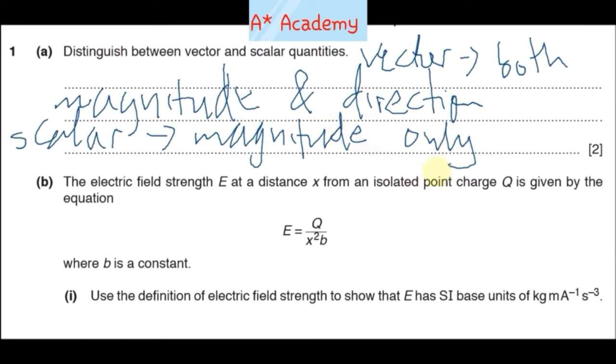The electric field strength E at a distance from an isolated object... use the definition of field strength to show that E has SI base units of that. Well, electric field strength can be defined as the force per unit charge in an electric field, the force per unit charge at that point in an electric field. Right, so since it's force per unit charge, it means that E has got units of newtons per coulomb.